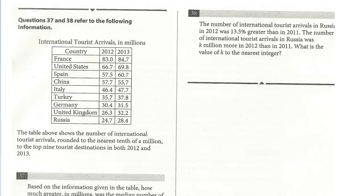In this lesson, we'll conclude a review of Math Test 9, Section 4, Calculate Permitted. We're on the last two gridding questions, 37 and 38, and this is a paired question. Both questions relate to this information. The table above shows the number of international tourist arrivals rounded to the nearest tenth of a million to the top nine tourist destinations in both 2012 and 2013.